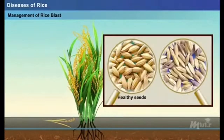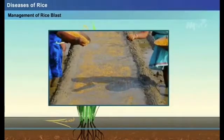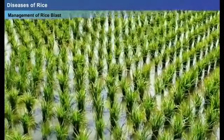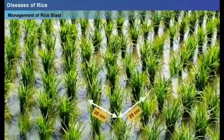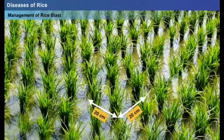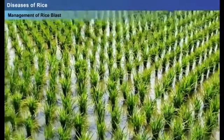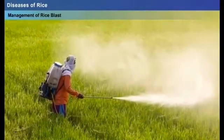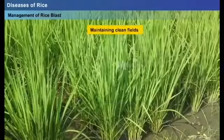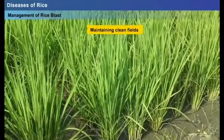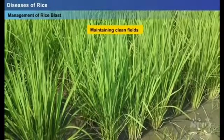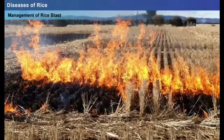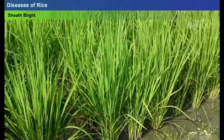Rice blast can be managed by segregating healthy seeds from diseased crop and sowing them as resistant varieties; by following recommended spacing during planting (20 x 20 cm) to enhance aeration and light penetration; by applying recommended levels of fertilizers, as excessive usage can increase blast infection intensity; and by maintaining clean fields, burning or burying diseased plant material.